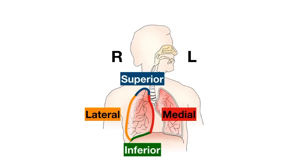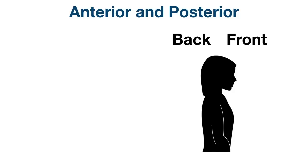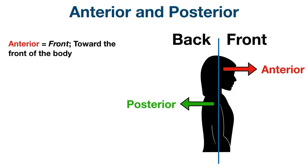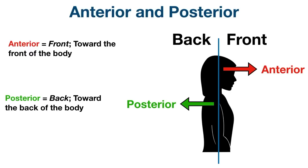Moving on to the next pair of directional terms — anterior and posterior. We're going to divide the body into front and back portions using a coronal plane. The coronal or frontal plane runs vertically side to side and divides the body into front and back sections. If we move toward the front of the body, then we're moving anterior — anterior describes the front of the body. If we move toward the back, then we're moving posterior — posterior describes the back of the body. A comes before P in the alphabet, which can help you remember anterior is in the front and posterior is in the back.